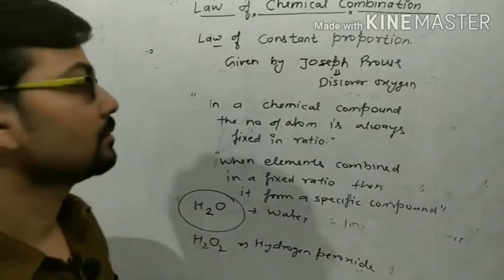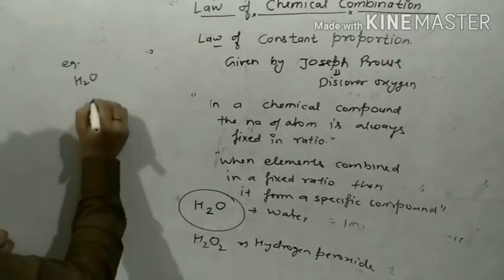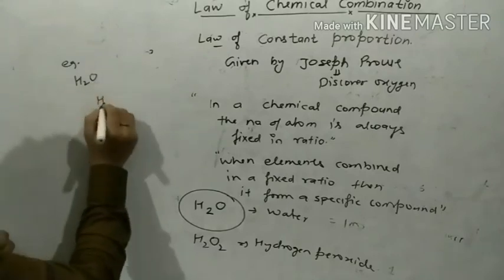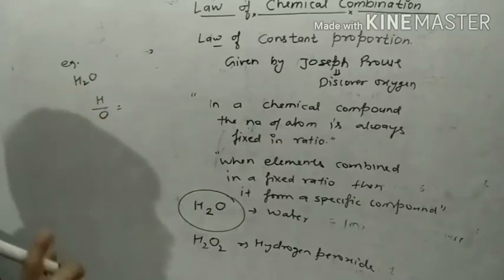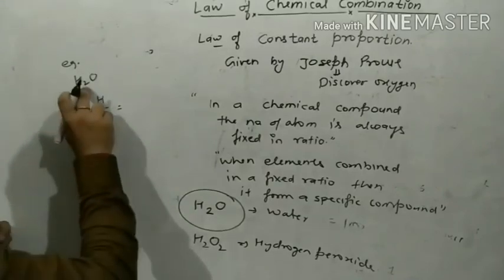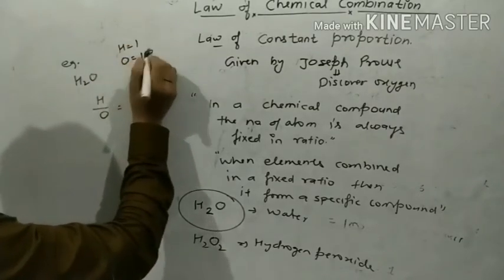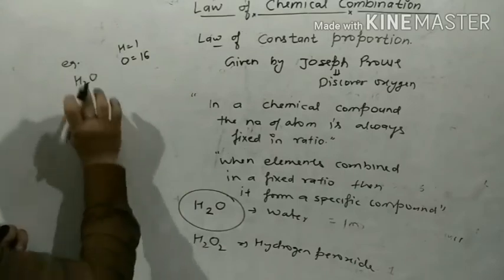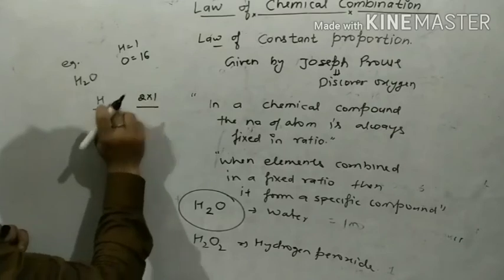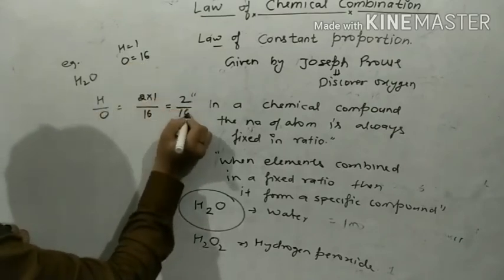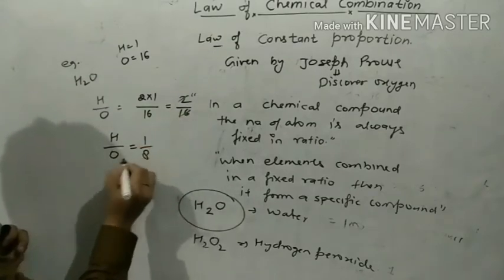In the case of H₂O, there are 2 hydrogen atoms and 1 oxygen atom. The atomic mass of hydrogen is 1 and oxygen is 16. So mass of hydrogen = 2 × 1 = 2, and mass of oxygen = 16. Therefore, the ratio of hydrogen to oxygen = 2 ÷ 16 = 1:8. In water, hydrogen and oxygen are always in the ratio 1:8 — this is constant and definite proportion.